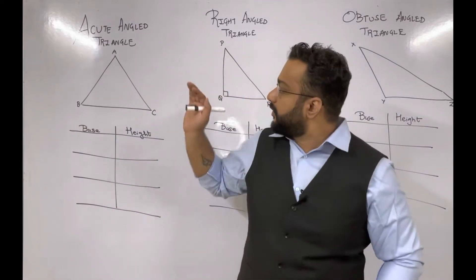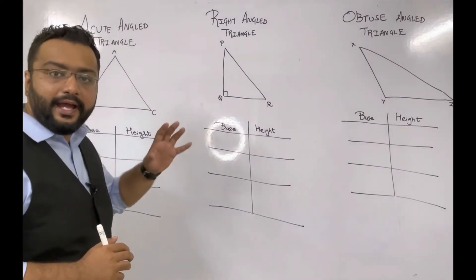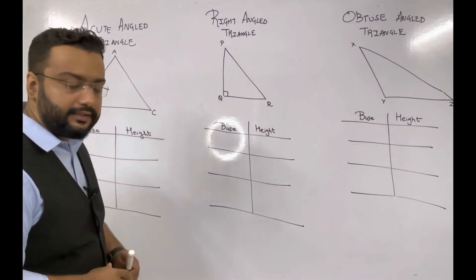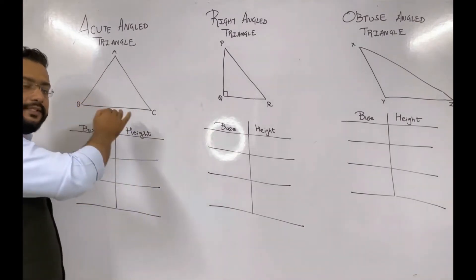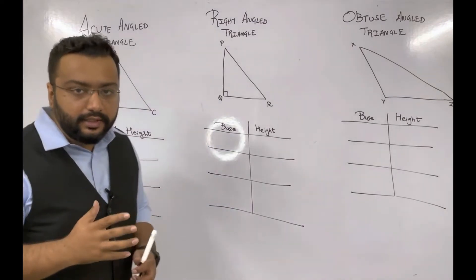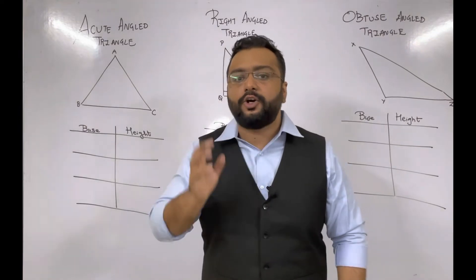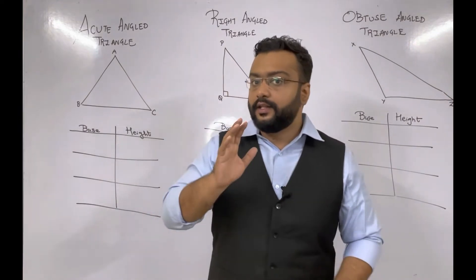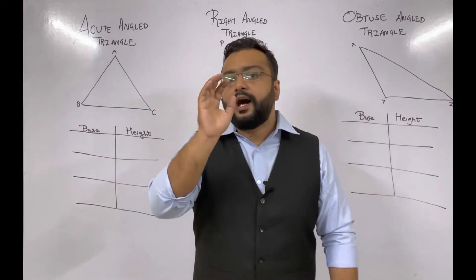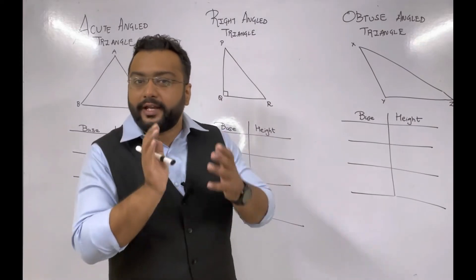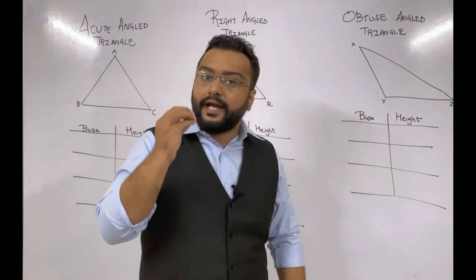In a triangle there are total three sides. I have drawn all three types and in each triangle we have three sides. In triangle ABC we have sides AB, BC, and AC. What we need to learn is how to select the base and height of a particular triangle. Height is always perpendicular — altitude or height is always perpendicular, so whenever you select any height it should be perpendicular.